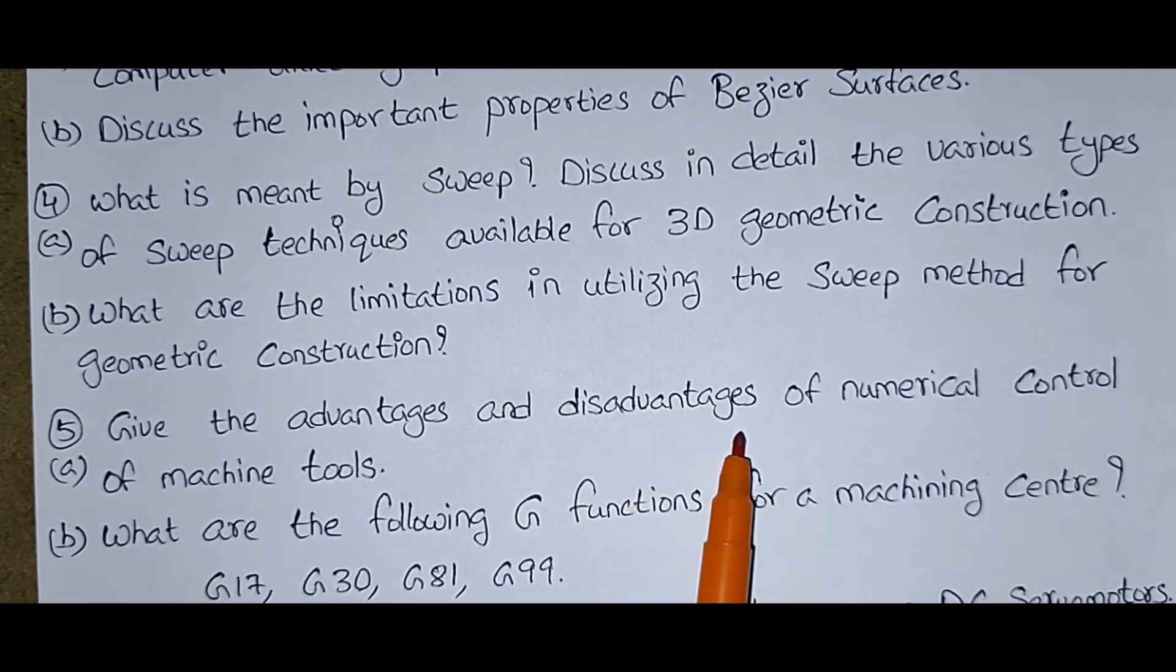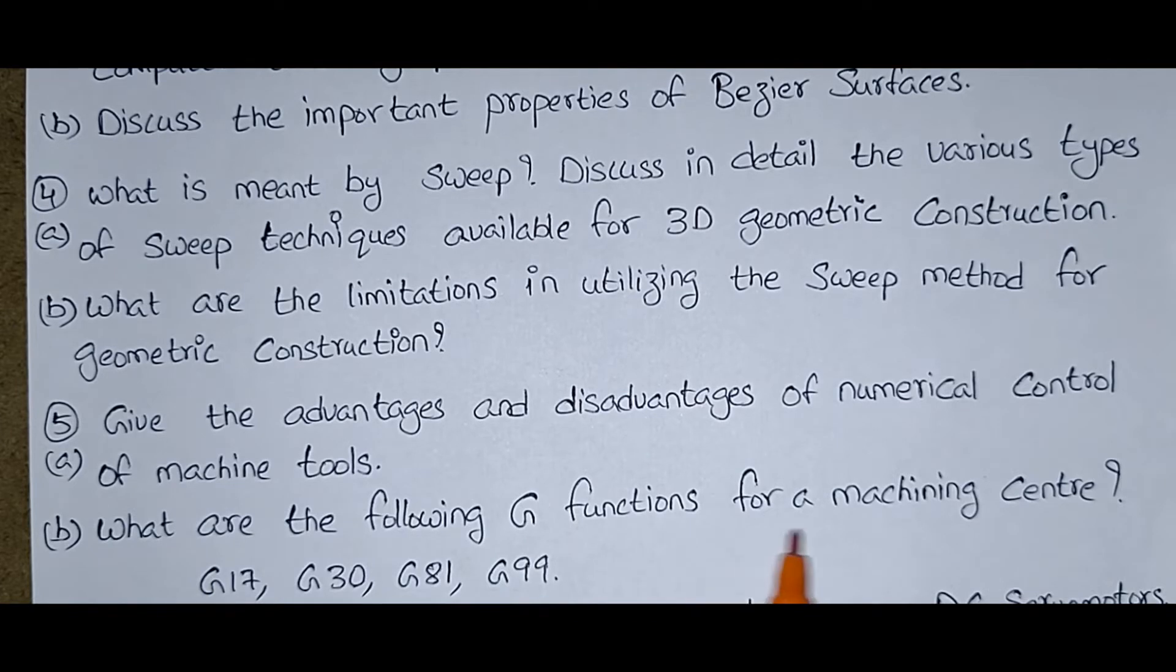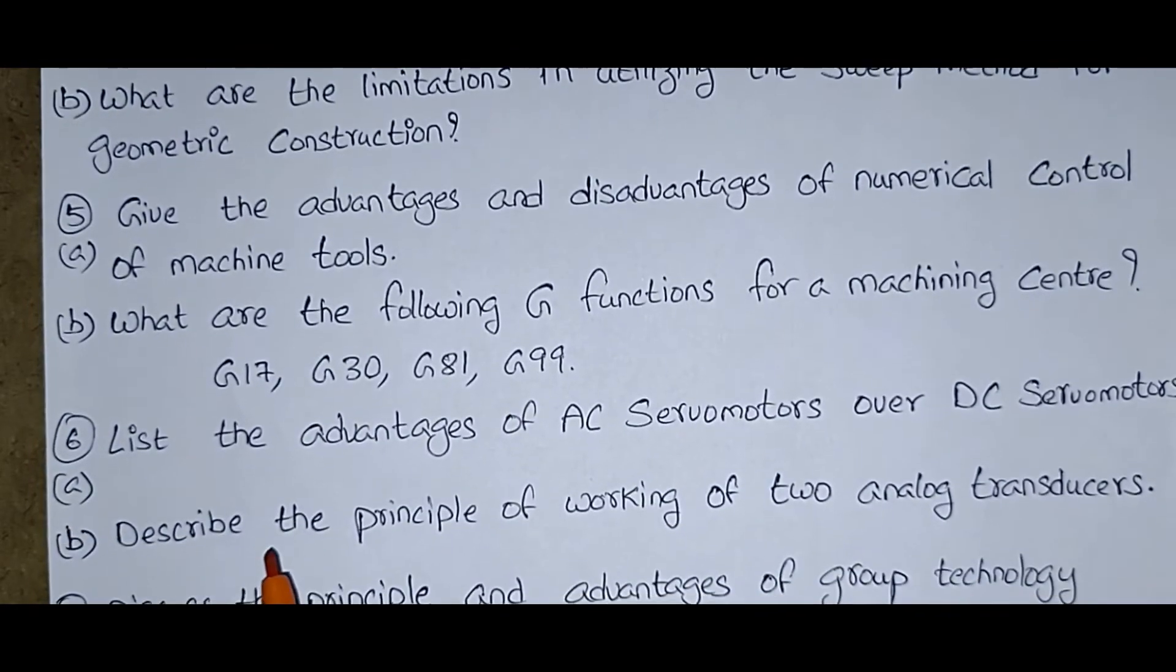Give the advantages and disadvantages of numerical control of machine tools. And B bit is what are the following G functions for a machining center: G17, G30, G81, G99. Sixth one also two questions are there.